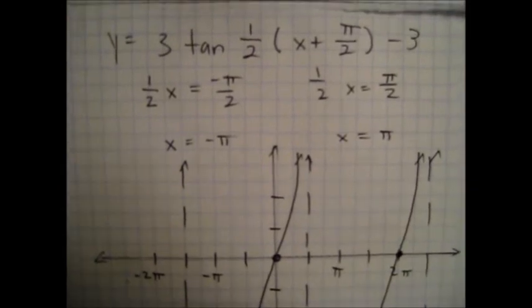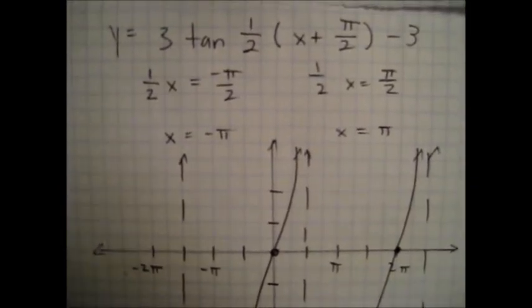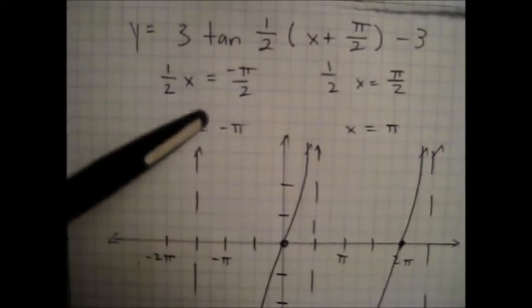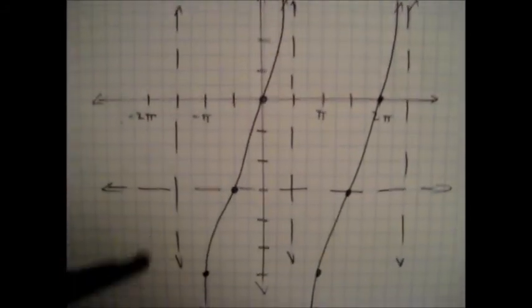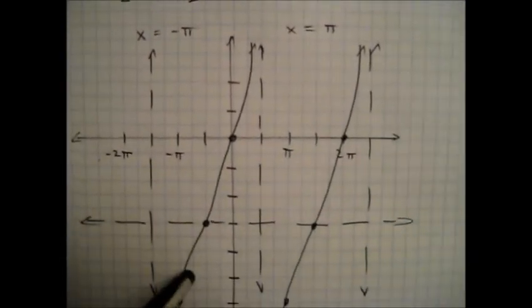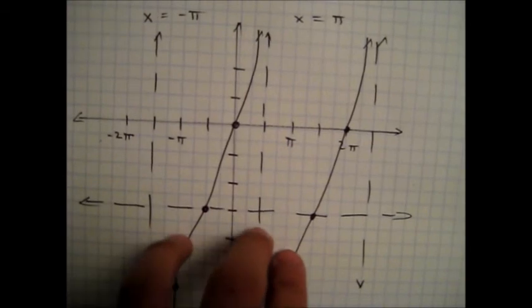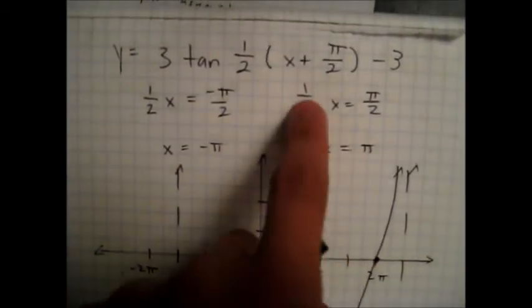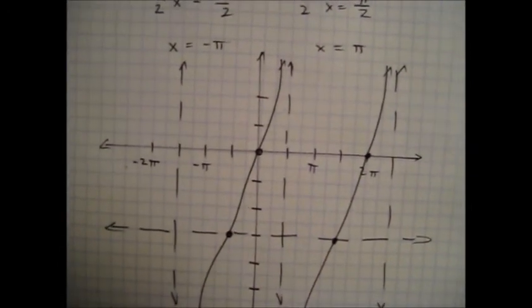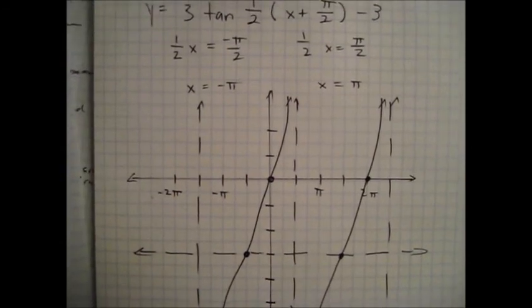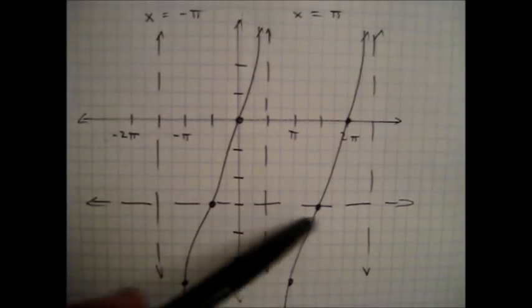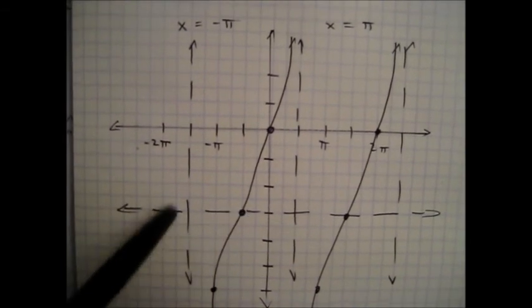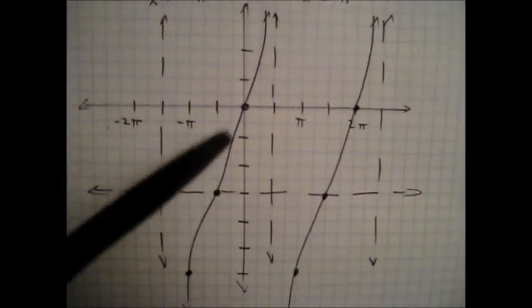Here's an example where everything is thrown in together at once. The first thing you want to do is find the asymptotes, so we'll take this one half x and set it equal to negative pi over two and pi over two. Then you'll find the asymptotes are at negative pi and pi. Except you have to shift the whole graph, so instead of putting it at pi and negative pi, you'll shift it over negative pi over two spaces. Then you have to worry about the vertical shift, which is negative three — you'll put it down three and use that as your reference line. You'll find the point in between, plot the zero, but instead of going up one, you'll go up three. And on this side, you'll go down three.